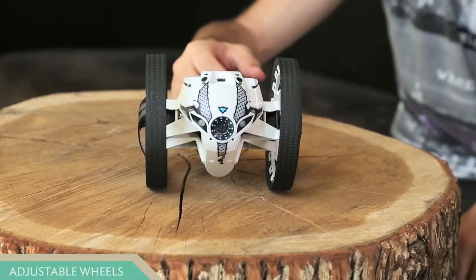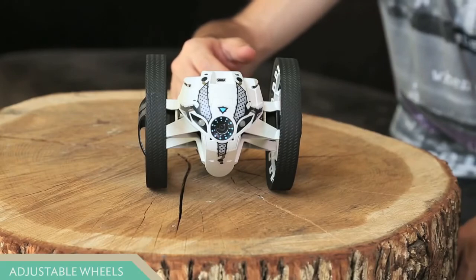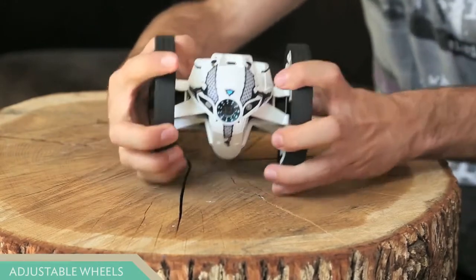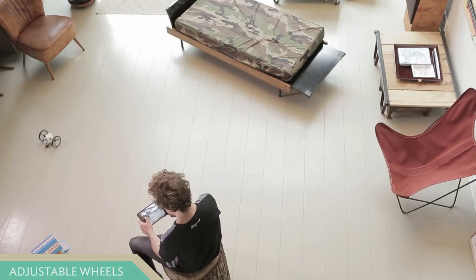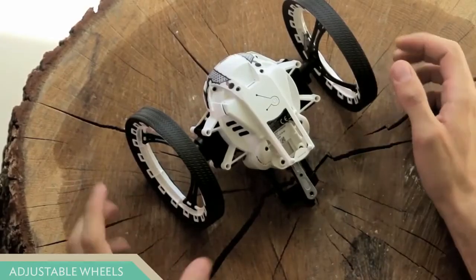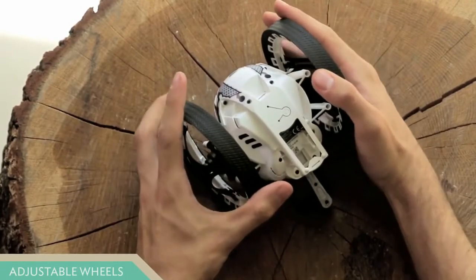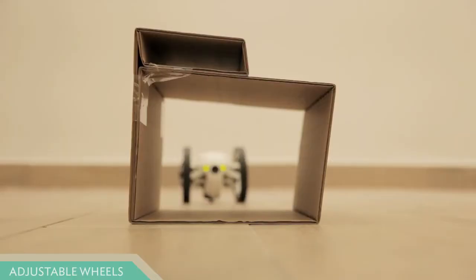Jumping Sumo has adjustable wheels for two piloting experiences. Open wheel mode, which gives Jumping Sumo greater stability and high speed, or retracted wheel mode, which enhances the agility and maneuverability through narrow areas.